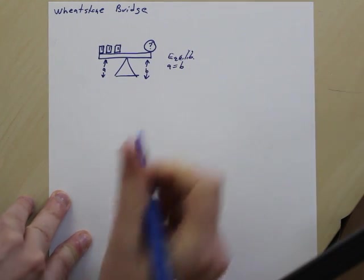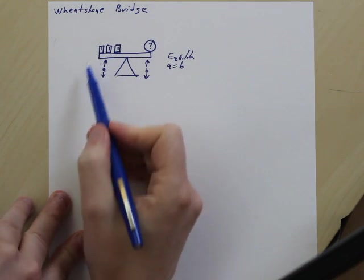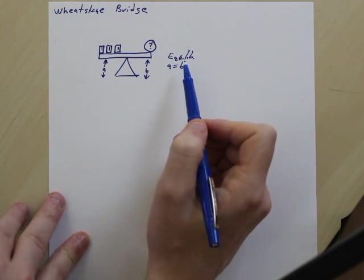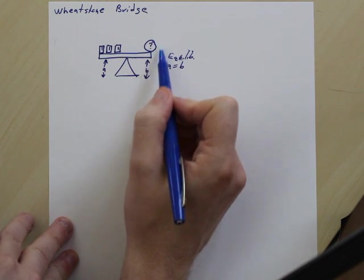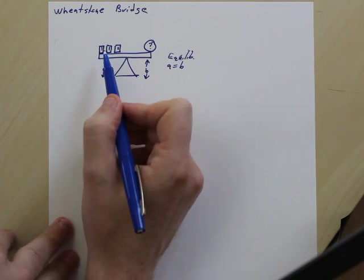A equals B, equilibrium. So this is the mechanical analog of what we're trying to do with the Wheatstone. We're trying to find the resistance or weight of this one by using known weights over here.